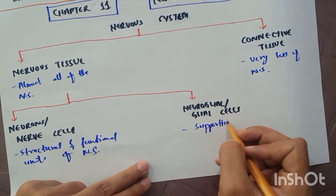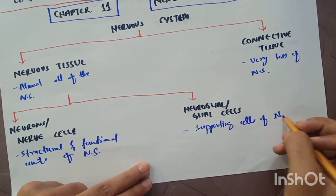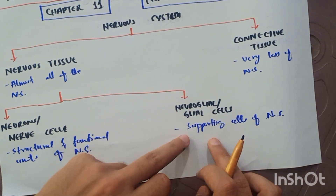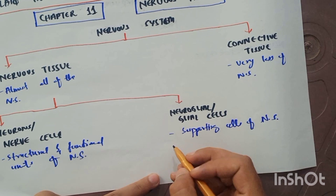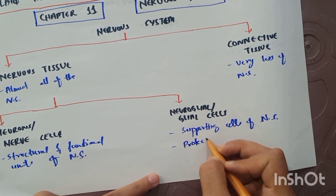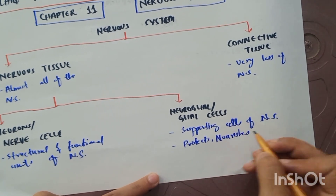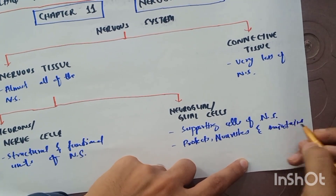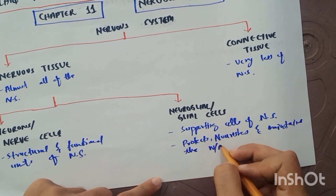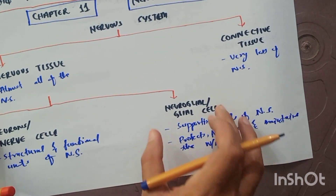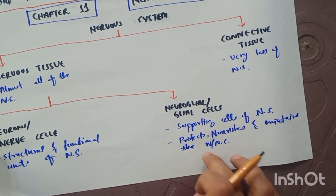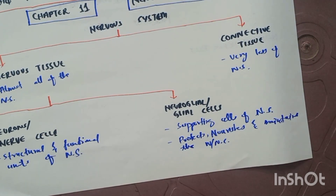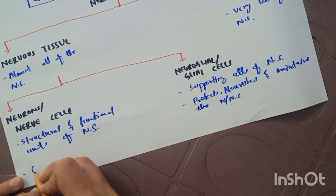The neurons are the structural and functional units of the nervous system, and the neuro glial or glial cells are the supporting cells of the nervous system. The glial cells protect, nourish, and maintain the neurons or nerve cells. These supporting cells protect and support the neurons.